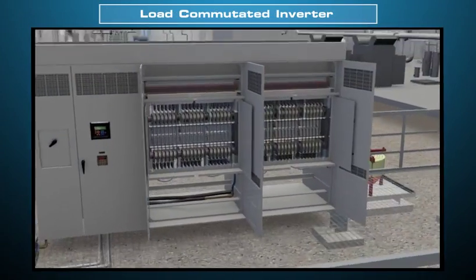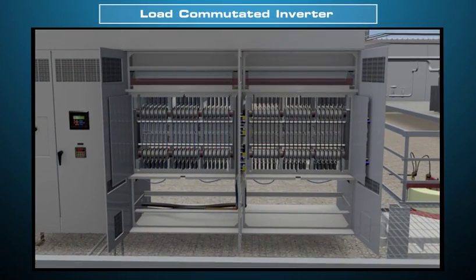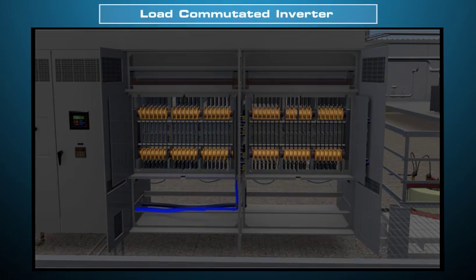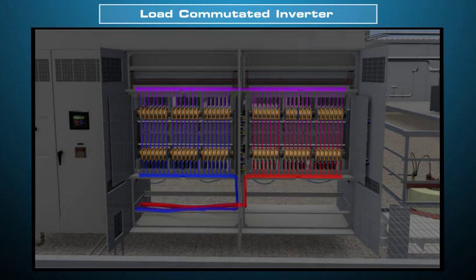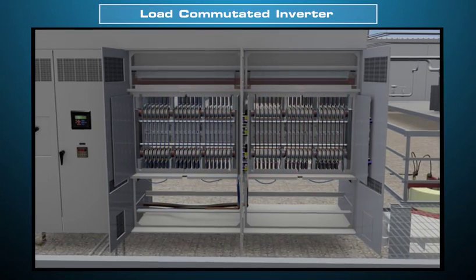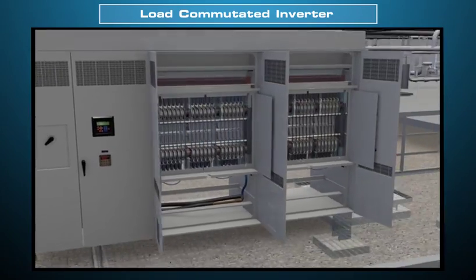The load commutated inverter is a solid-state device which converts the generator into a motor used for starting the gas turbine. These chapters explain its design and operation.